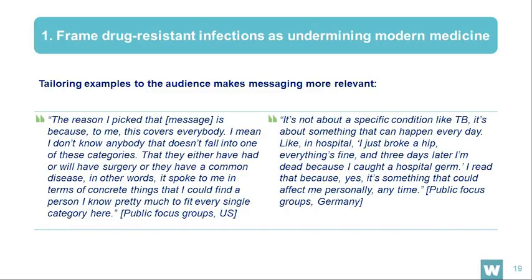When communicating the impact of antimicrobial resistance on modern medicine, we should illustrate our arguments with examples of routine procedures, common diseases, and illnesses that could be affected. In order for messages to resonate, those examples should be tailored to ensure they're most relevant to the specific audience being addressed — both by country and by demographic group. For example, using examples relevant to parents, the elderly, men, women, or other specific demographic groups. We recommend giving examples of the most common procedures, diseases, illnesses, or injuries in the country or among the specific groups we're communicating with.